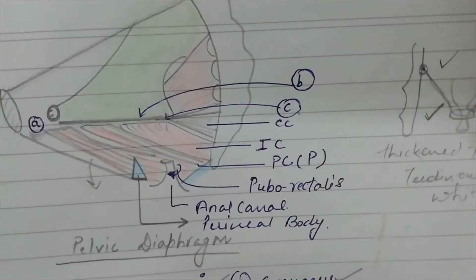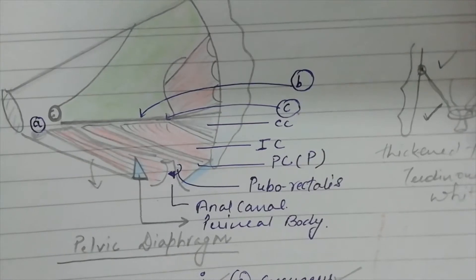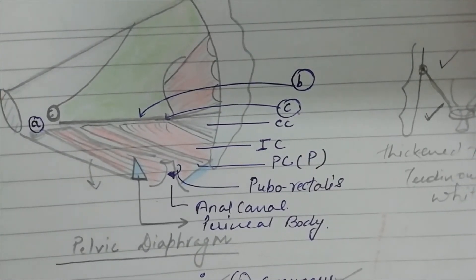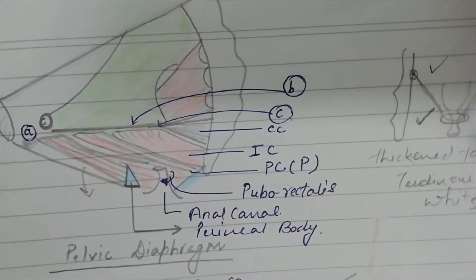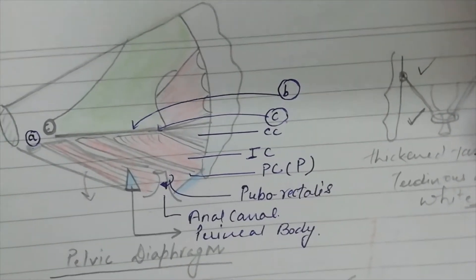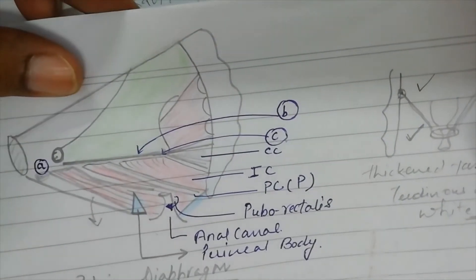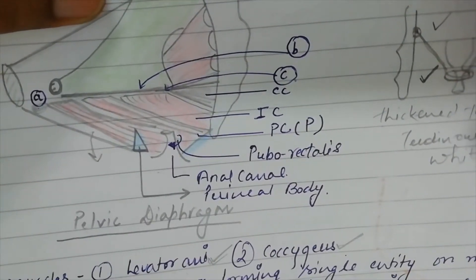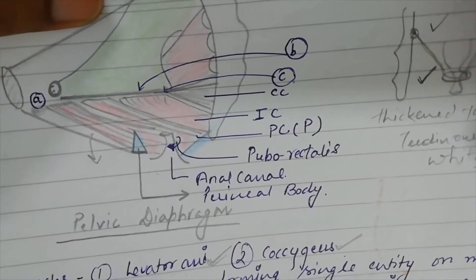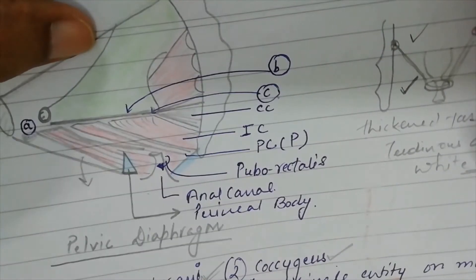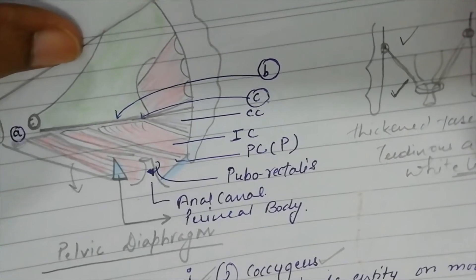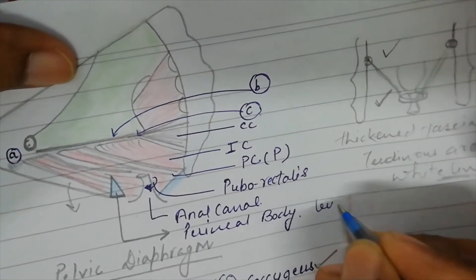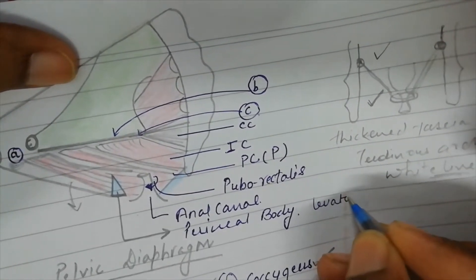Now we will discuss the Pelvic Diaphragm and Perineal Body. The Pelvic Diaphragm is basically composed of a muscle known as Levator Ani.